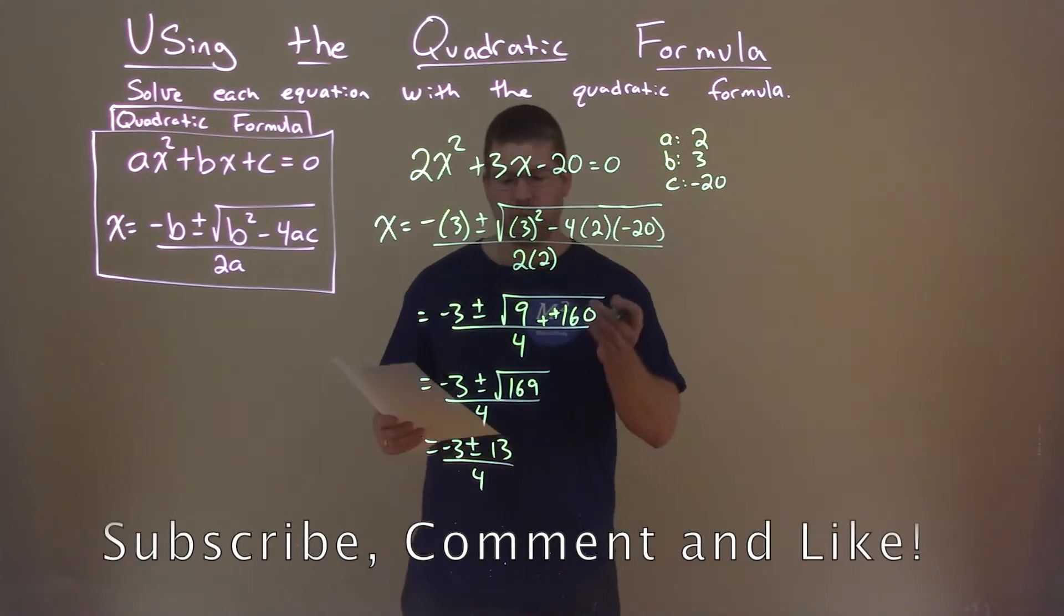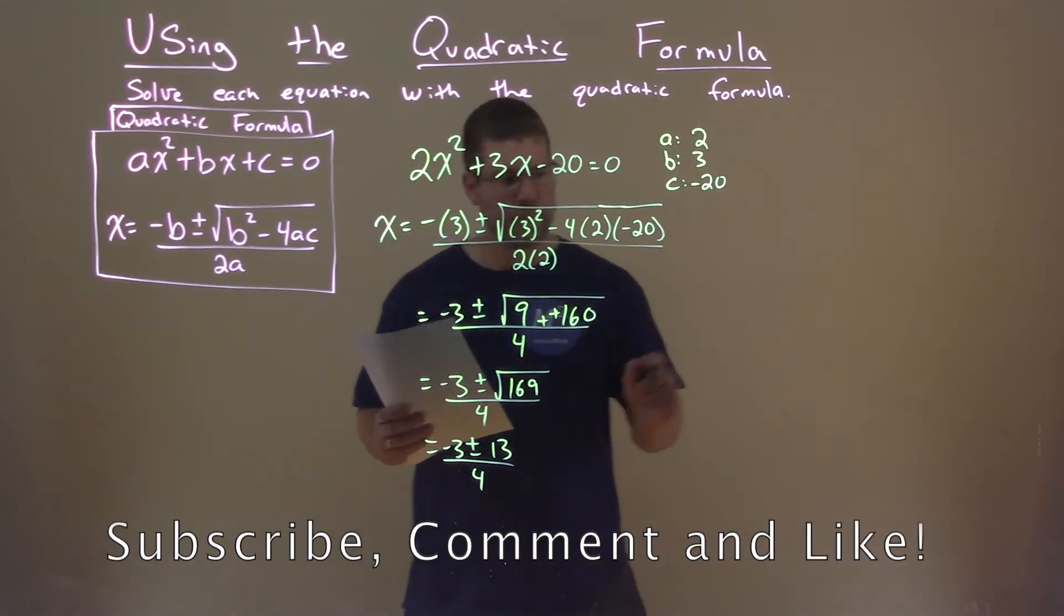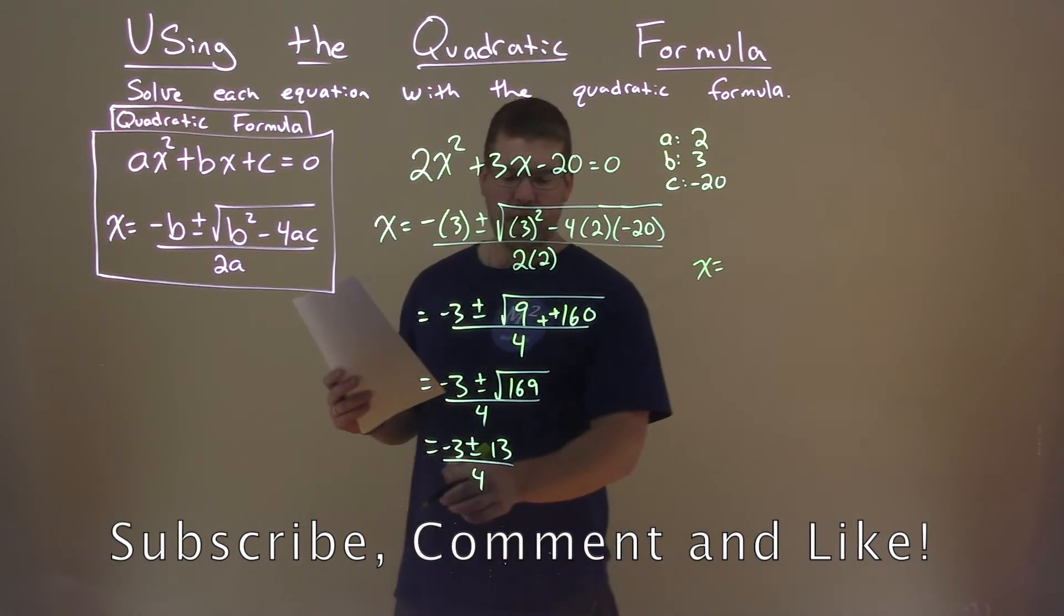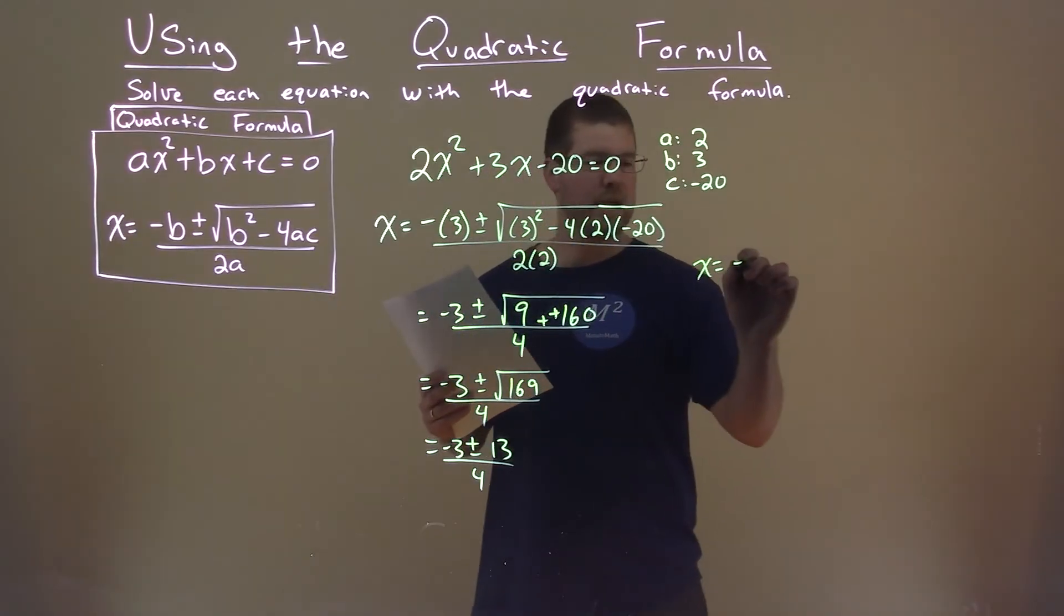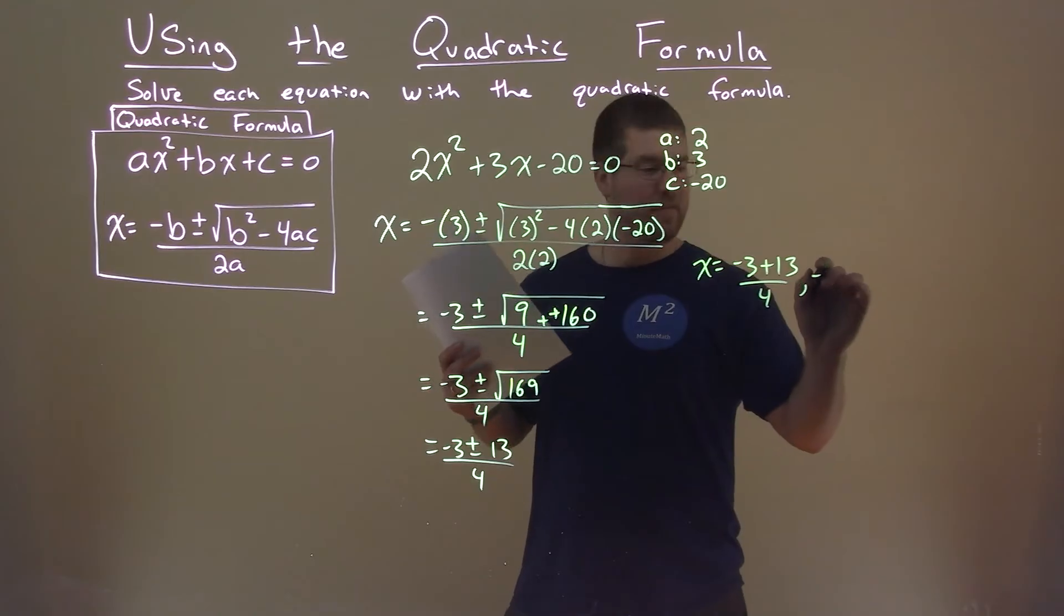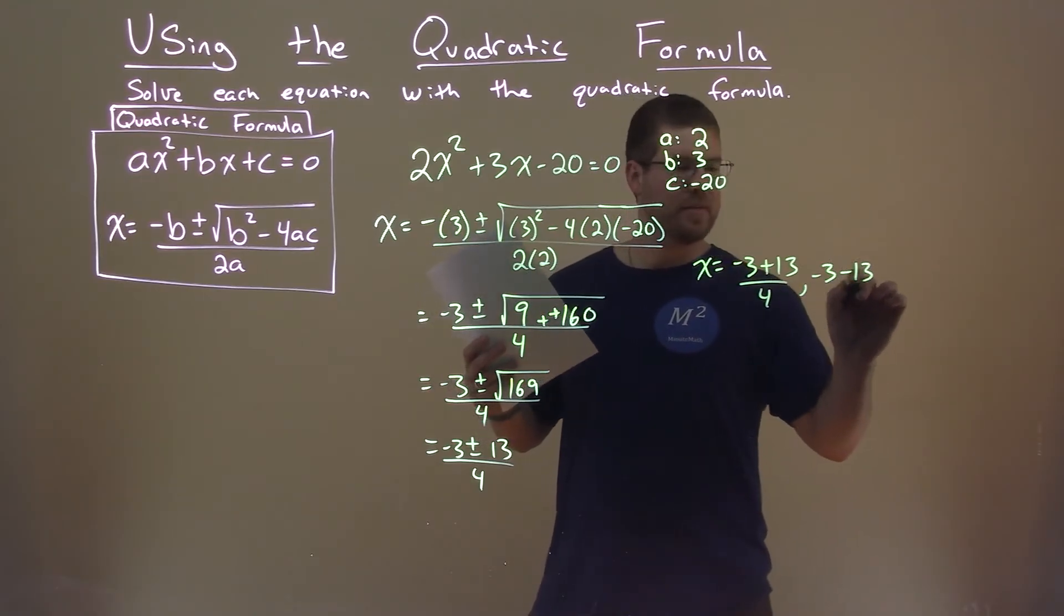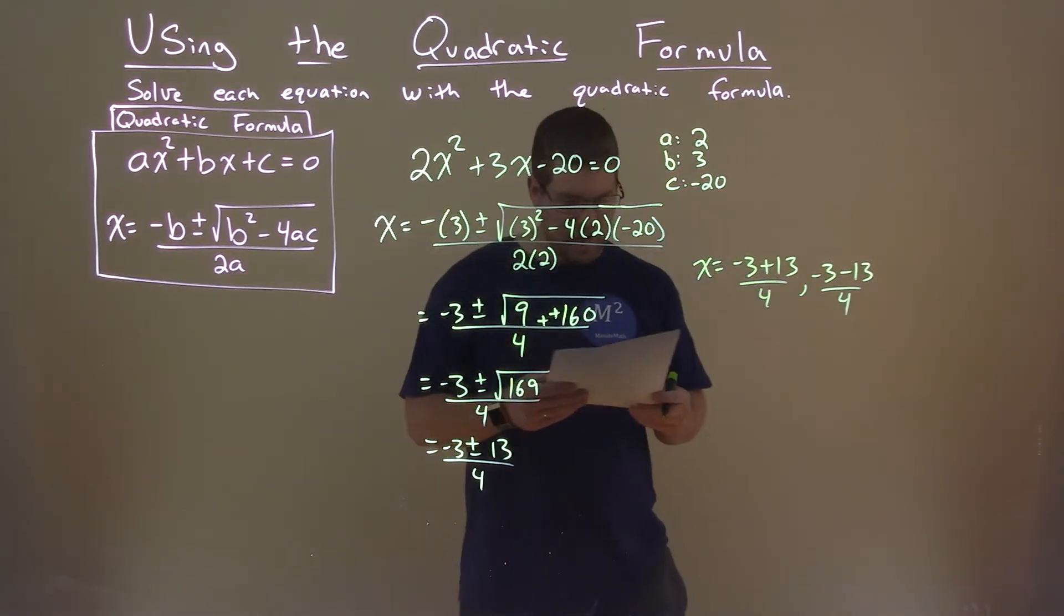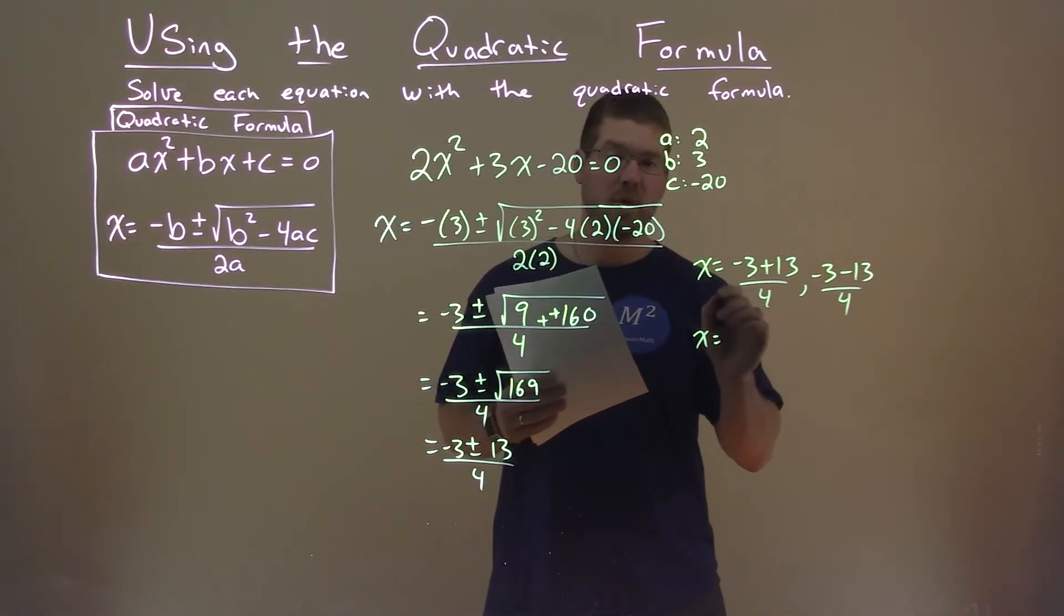Now we have negative 3 plus or minus 13 over 4. We can separate that out to be two parts: negative 3 plus 13 over 4, and negative 3 minus 13 over 4. Now we have to simplify each one.